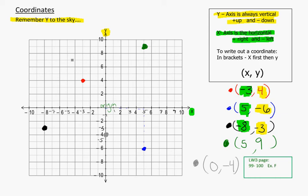So those are the coordinate axes. Remember, it's always y to the sky, and x on the side. But we always have to write the x coordinate first, and then the y. So always x, then y, in brackets with a comma. Your negatives take you to the left and down, and your positives take you to the right and up.